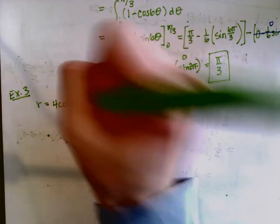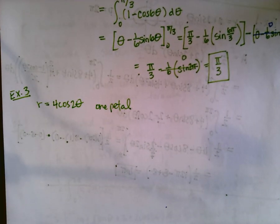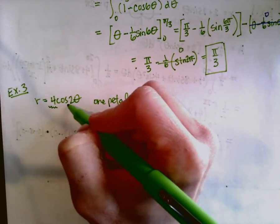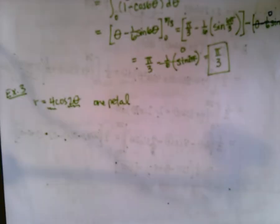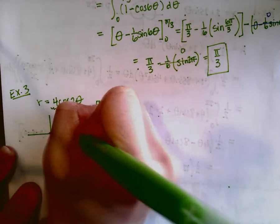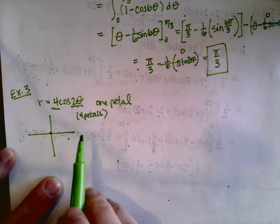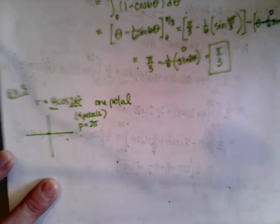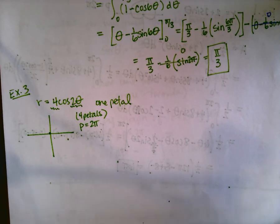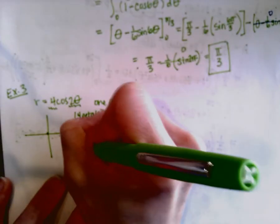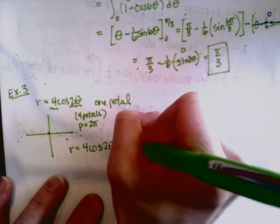Example three is r equals four cosine two theta, find the area of one petal. This is also a rose. The four tells you how long the petals are; the two determines how many petals. Since it's even, you have twice that many petals, so cosine two theta should have four petals. With an even number of petals the period is two pi. Even if you're not sure, you can just set r equal to zero to find where each petal starts and stops.